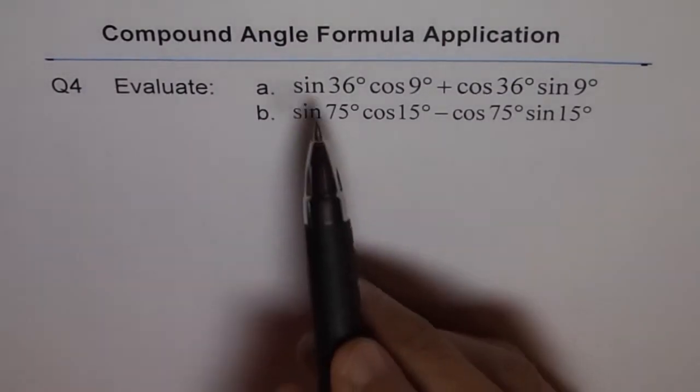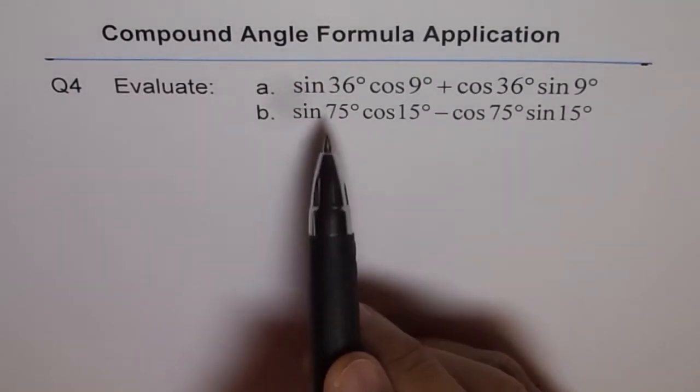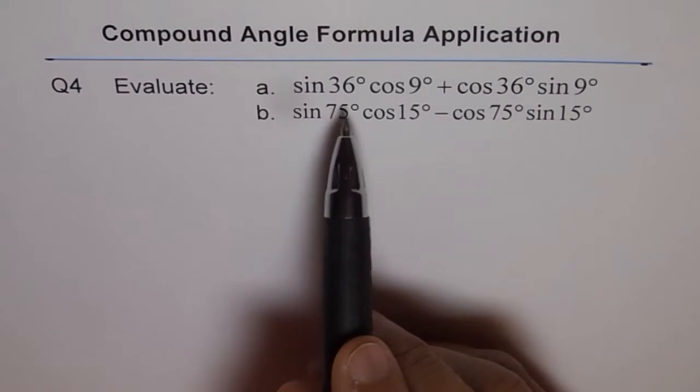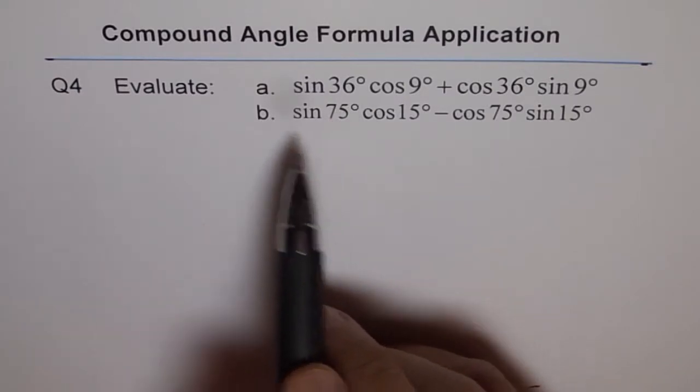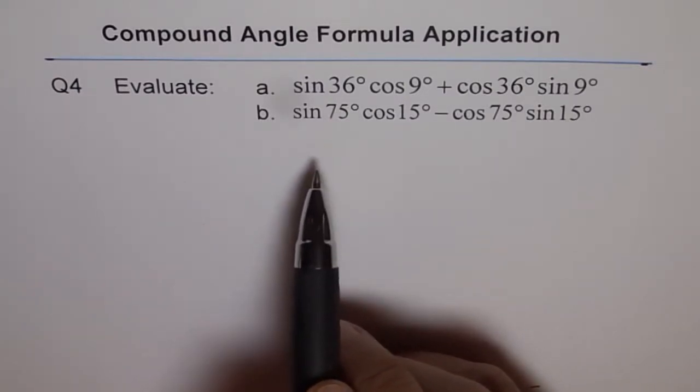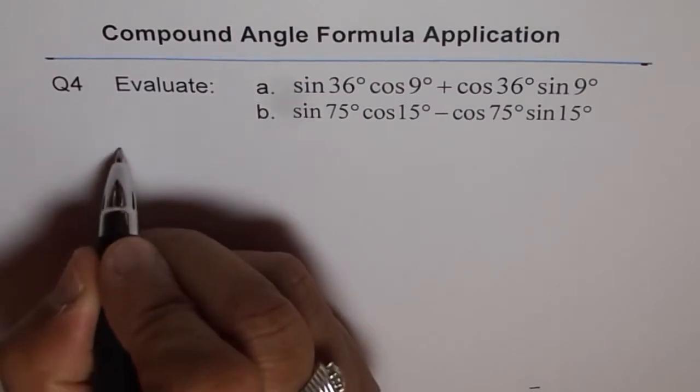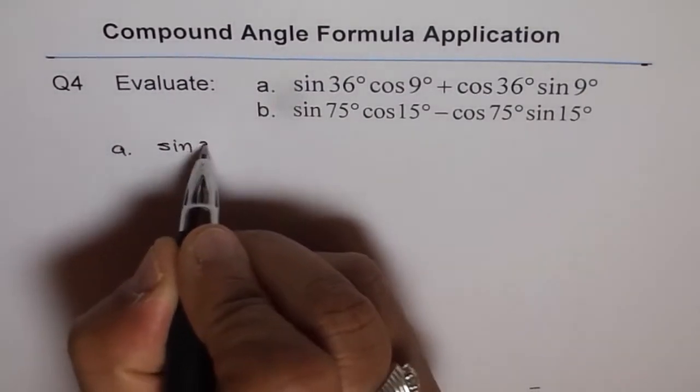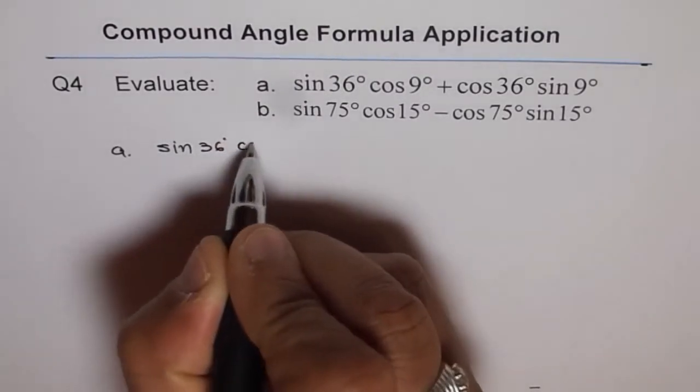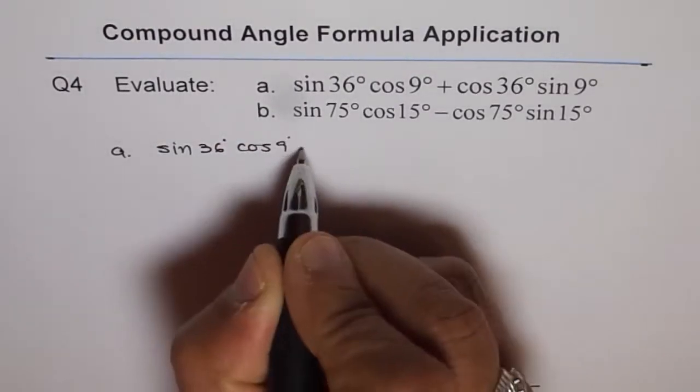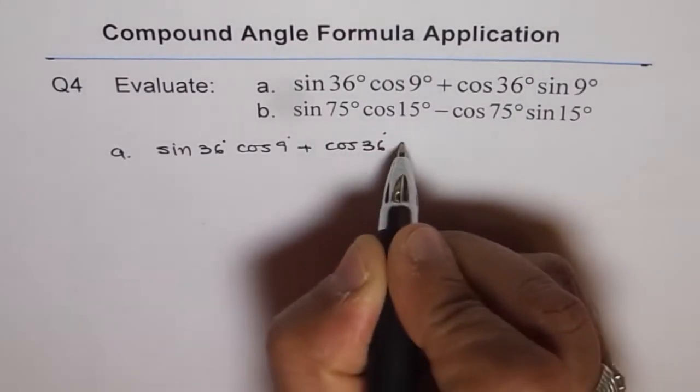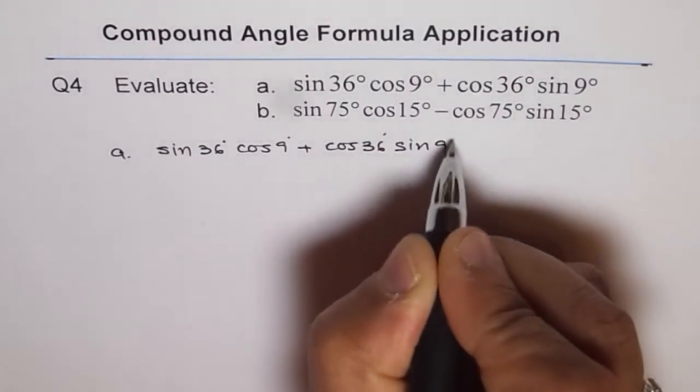Now we can use compound angle formula and write this in a form which is A plus B. So I will do one of them for you and leave the other one for you to do. Let's do A which is sin 36° cos 9° plus cos 36° sin 9°.